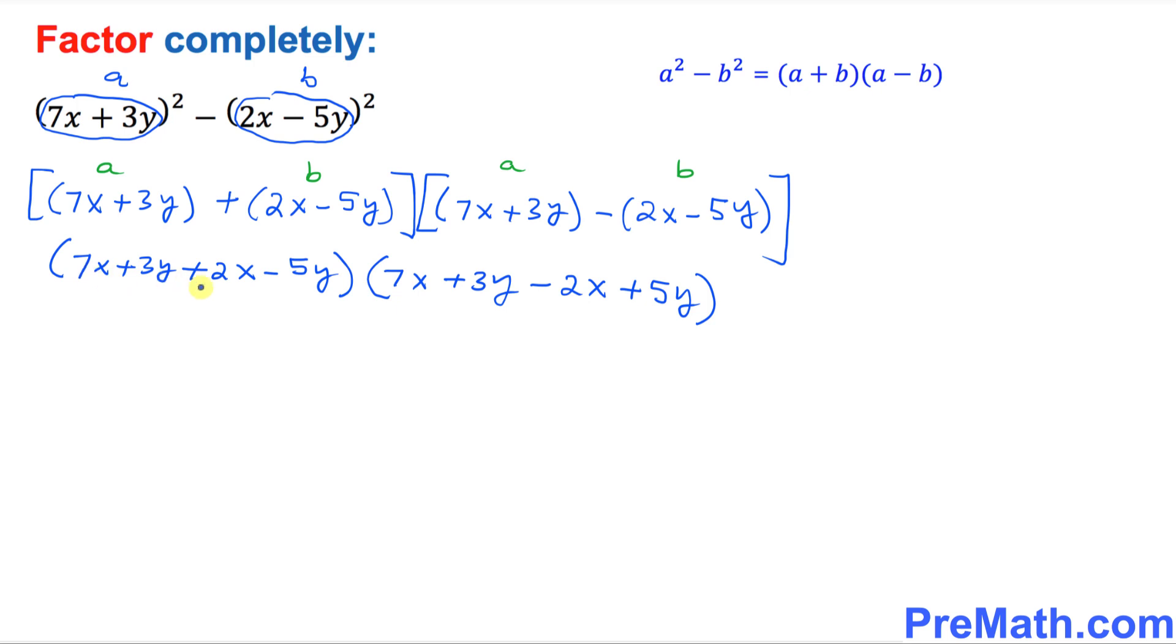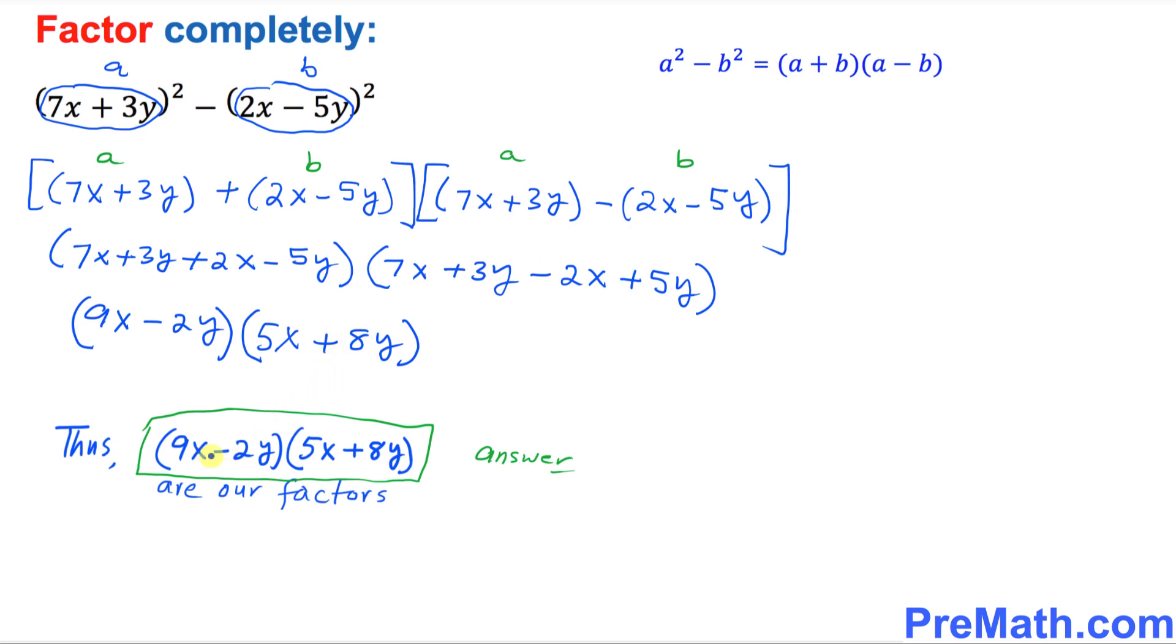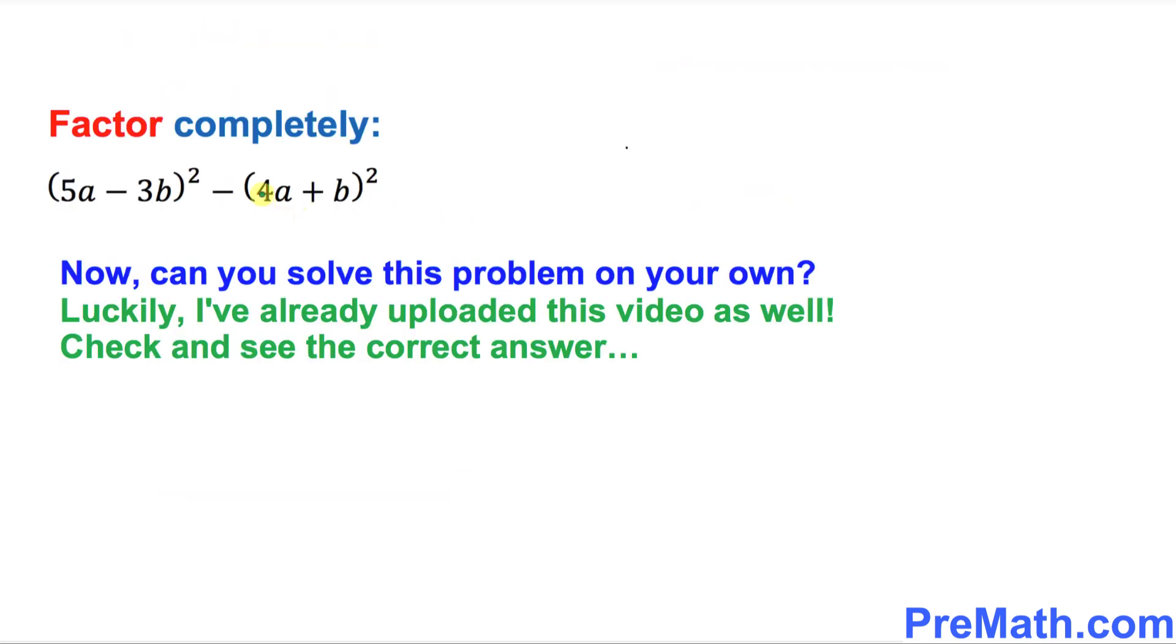So 7x + 2x is going to be 9x, and 3y - 5y is -2y, isn't it? Times 7x - 2x is going to give you 5x, and 3y + 5y is 8y. And those are our factors. Thus (9x - 2y) times (5x + 8y) is our answer.